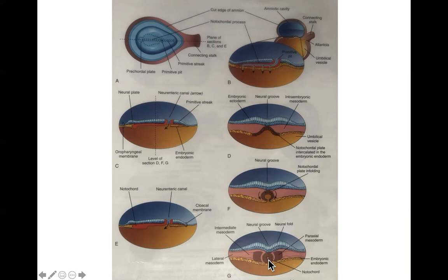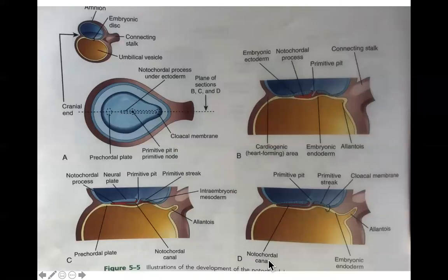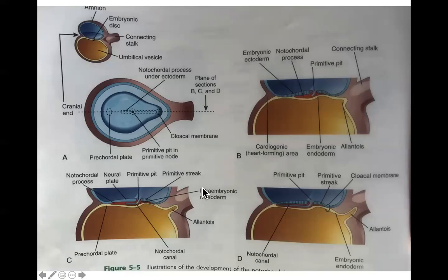Something really important to remember about the notochord is that it is a primary inducer of other tissues around it. Also at this time, the allantois forms as an outpouching on the caudal end of the umbilical vesicle, pouching out into the connecting stalk. The allantois is eventually going to play a major role in the formation of blood and the urinary bladder, and the blood vessels around it are eventually going to become the umbilical arteries and veins.